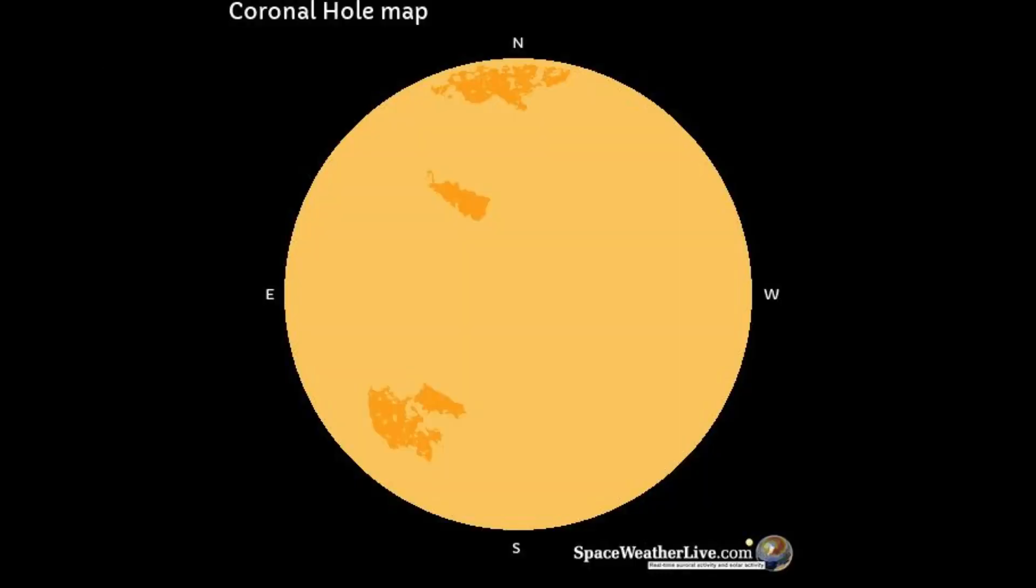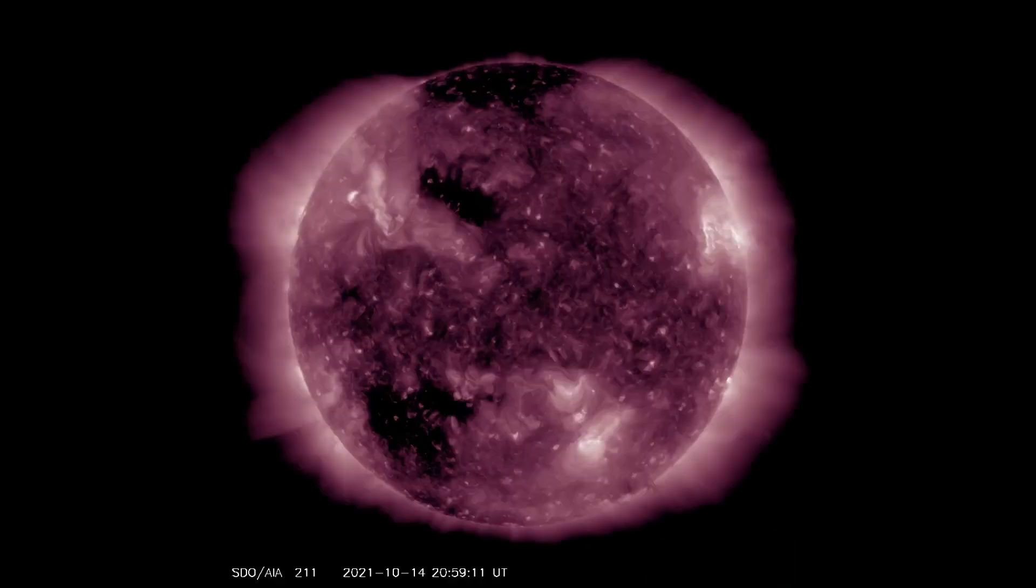On this coronal hole map, three coronal holes are observed on the Earth-facing side of the Sun. Coronal holes are the source of fast solar wind streams which sometimes have the potential to produce minor to moderate geomagnetic storms.